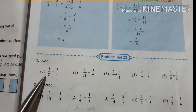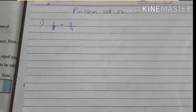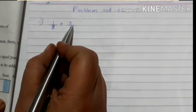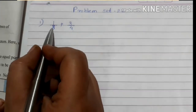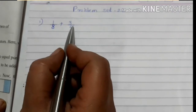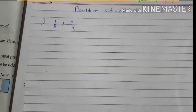Since the denominators are not the same, we have to make them the same. So let's see how to solve this question: 1 upon 8 plus 3 upon 4. Observe the denominator — here is 8 and here is 4. Since 8 is bigger and 4 is smaller, we observe the smaller number. Is it possible to convert 4 to 8? Yes, if we multiply 4 by 2 we get 8.